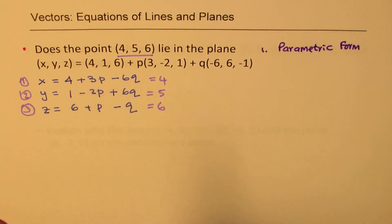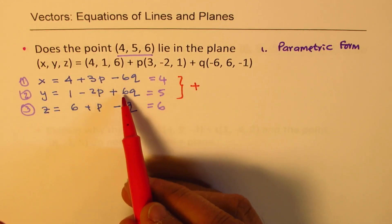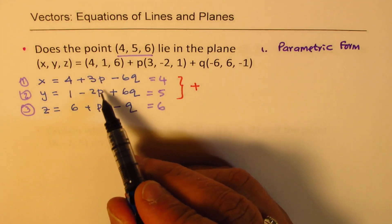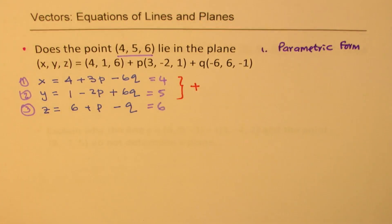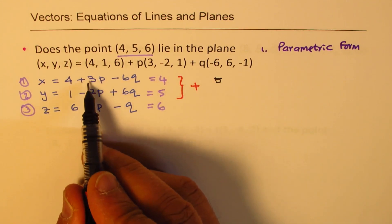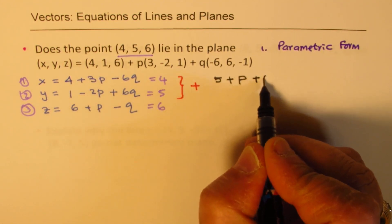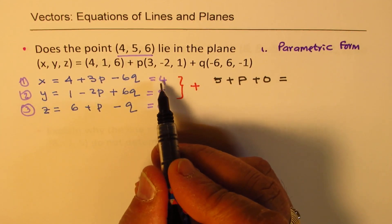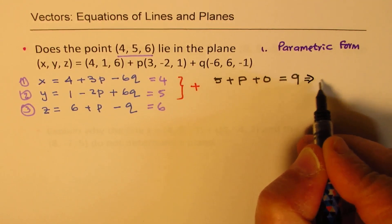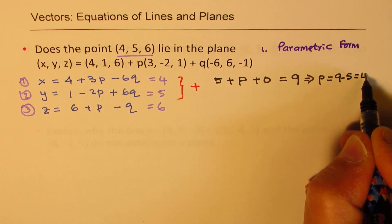Now, we need to somehow isolate p and q. So from the first two equations, we see that if I add them up, then what happens? This q value cancels. So we could isolate p. So now I'm going to just add these two equations. So when I add, I get 4 + 1 as 5, 3p - 2p as +p, -6q + 6q is 0, and here 4 + 5 is 9. So now we can find the value of p easily. So the value of p is equal to 9 - 5, and that is 4.